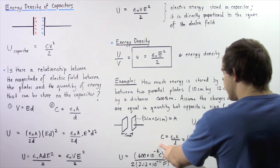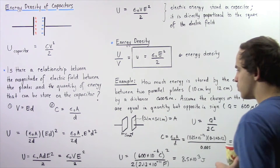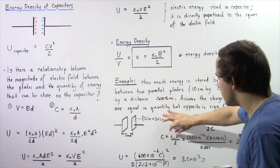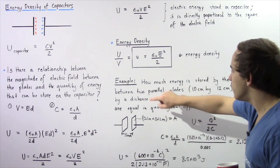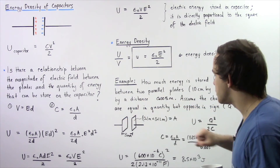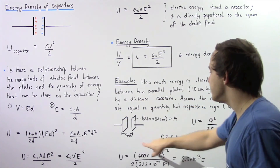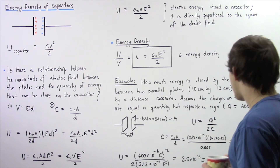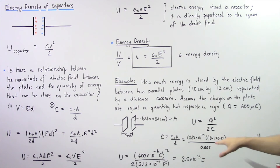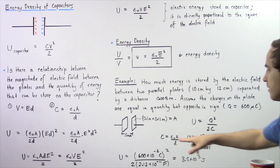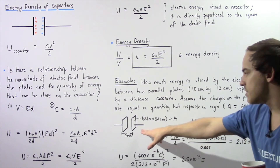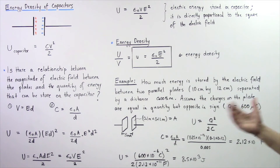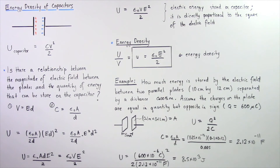The capacitance is equal to the product of the permittivity of free space and the area of one of these plates, divided by the distance between our two plates. Plugging in our quantities, we find the capacitance of this particular capacitor is equal to 2.12 times 10 to the negative 11 farads.